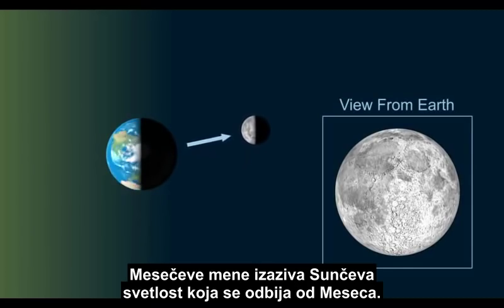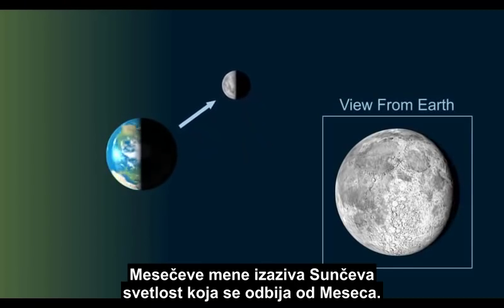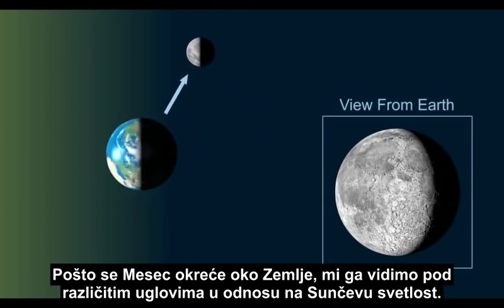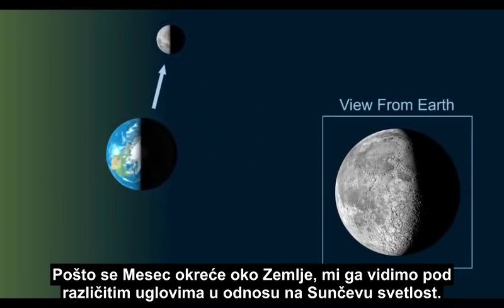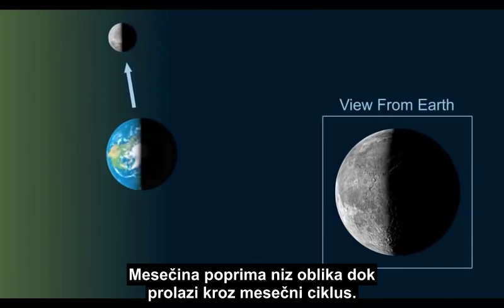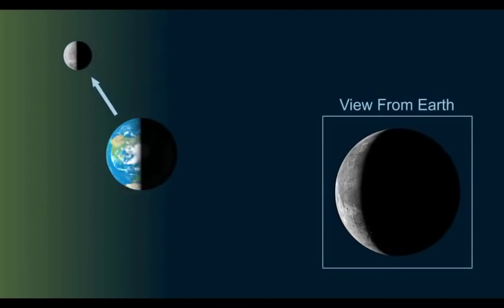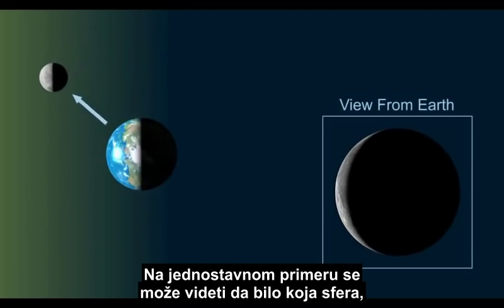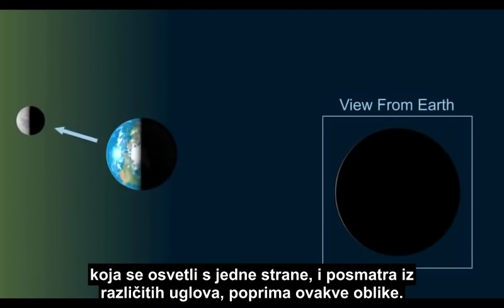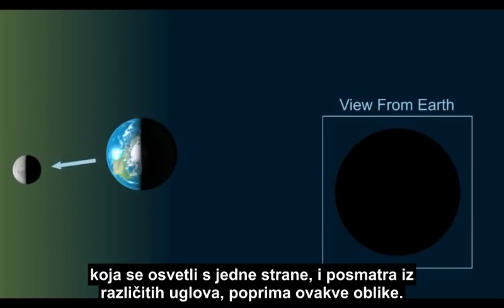The Moon's phases are caused by the light of the Sun reflecting off the Moon. As the Moon revolves around the Earth, we see it at different angles in relation to the Sun's light. The Moon's light takes on a series of shapes as it goes through its monthly cycle. You can see with a simple demonstration that any sphere lit from one side and viewed from different angles will take on these shapes.